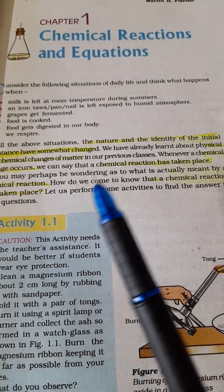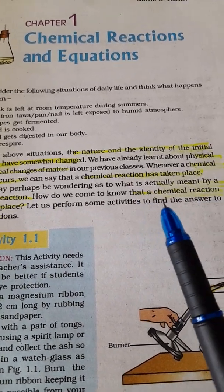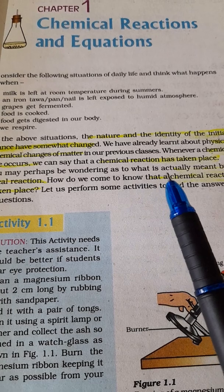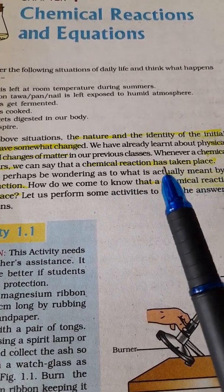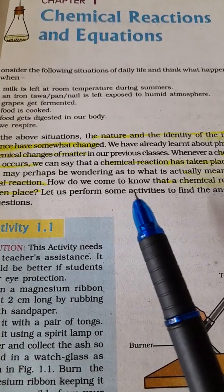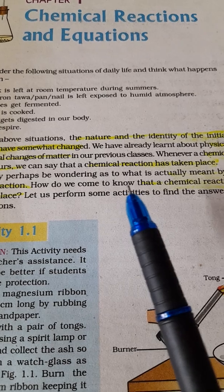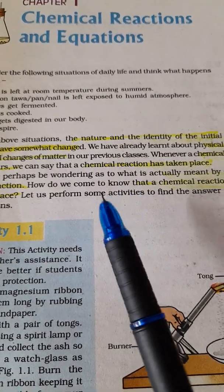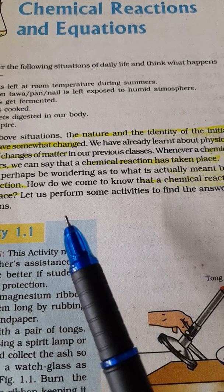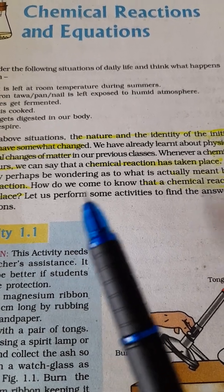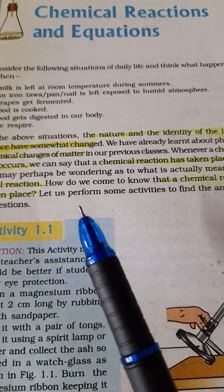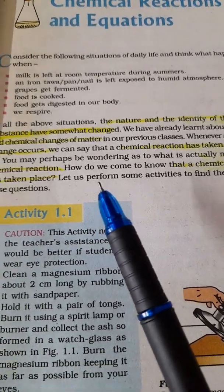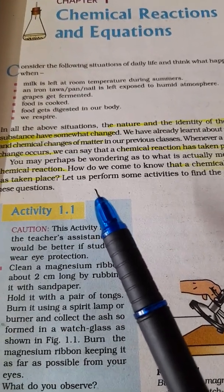You already learnt about physical and chemical changes of matter in the previous chapters. Whenever a chemical change happens we say that a chemical reaction has taken place. Physical change is a temporary change. For example, stretch a rubber band and it becomes long, but when you release it, it comes back to the original condition. But in a chemical change, when milk curdles, can you get the original form back? No, it is a permanent change.